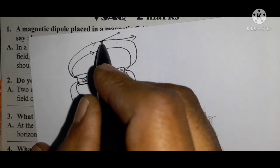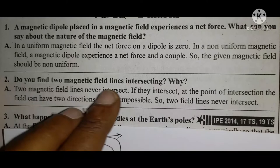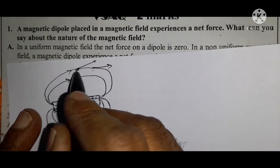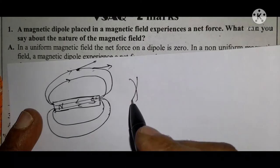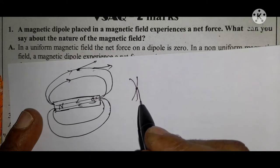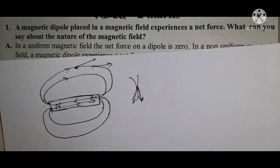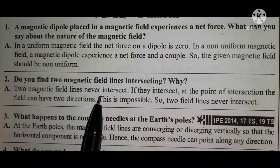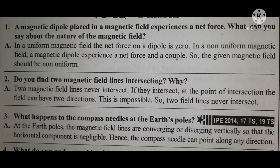Now, regarding question two — if two magnetic lines intersect, what happens? Say at a particular point two magnetic lines are present. If you draw the tangent at that point of intersection, the field would have two directions, which is impossible. Therefore, two magnetic lines never intersect. If they were to intersect, the field at that point would have two directions, which is impossible. The same applies to electric field lines as well.